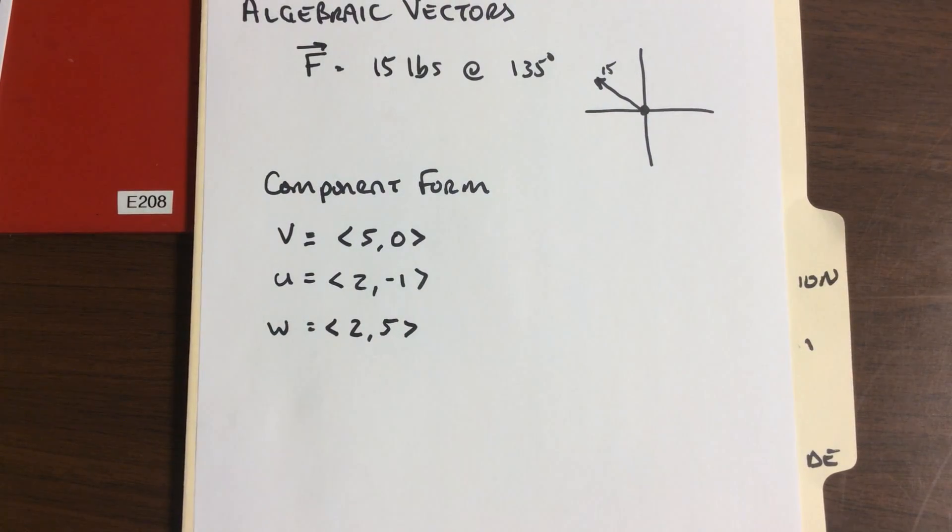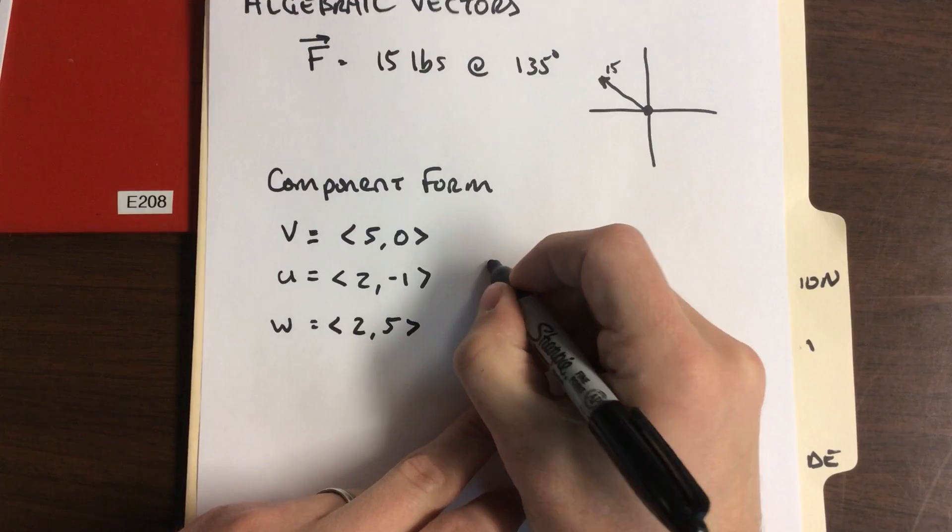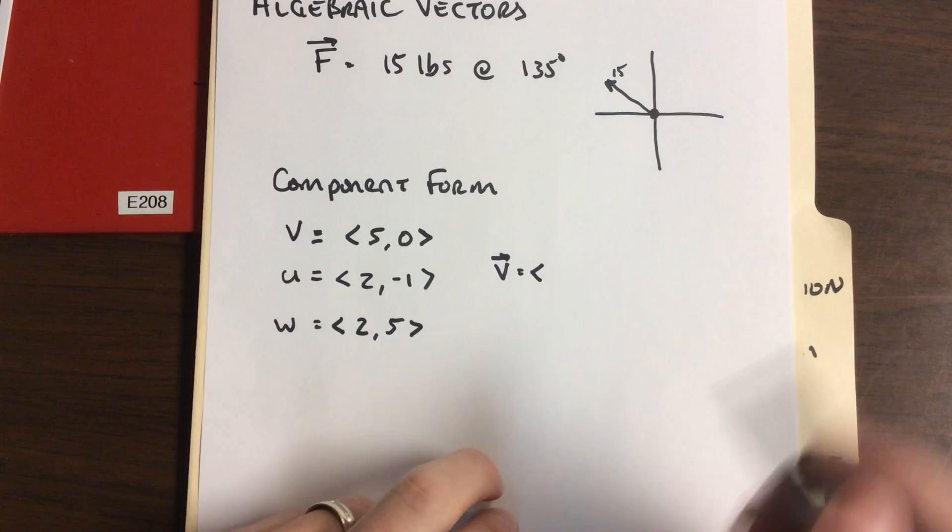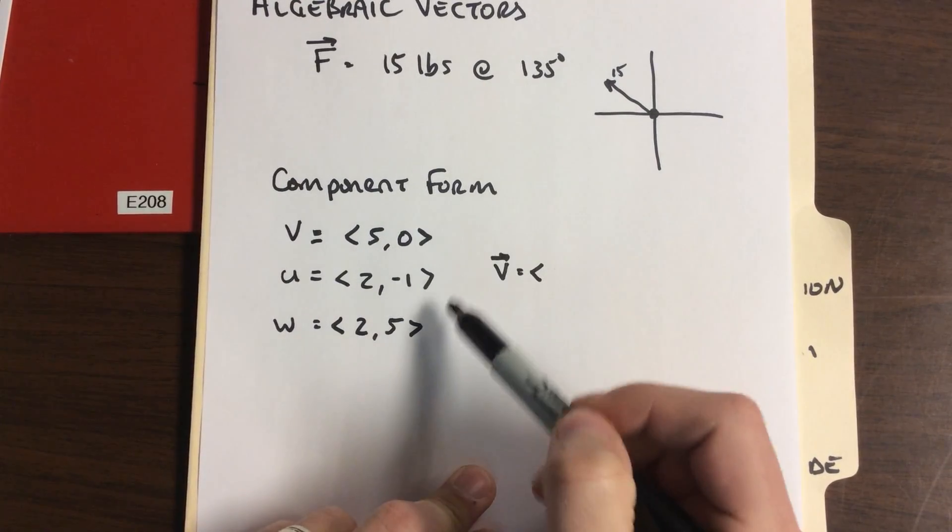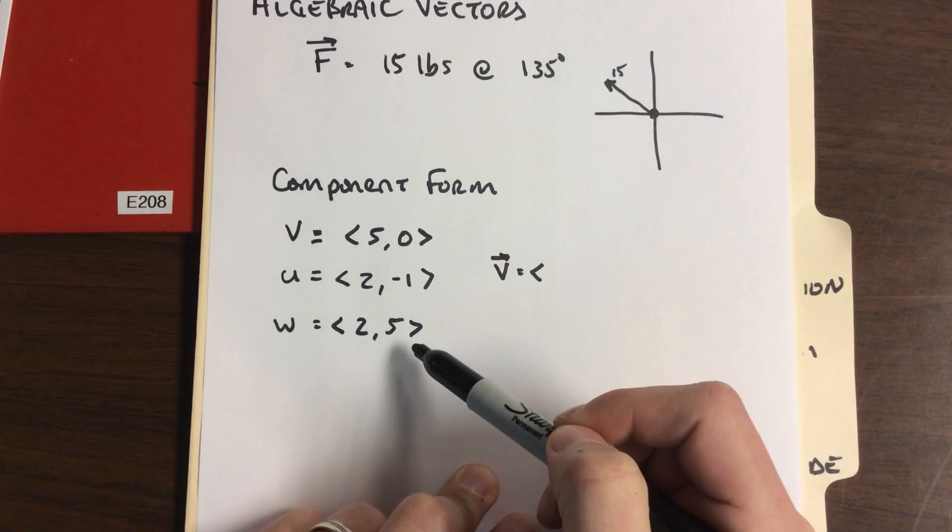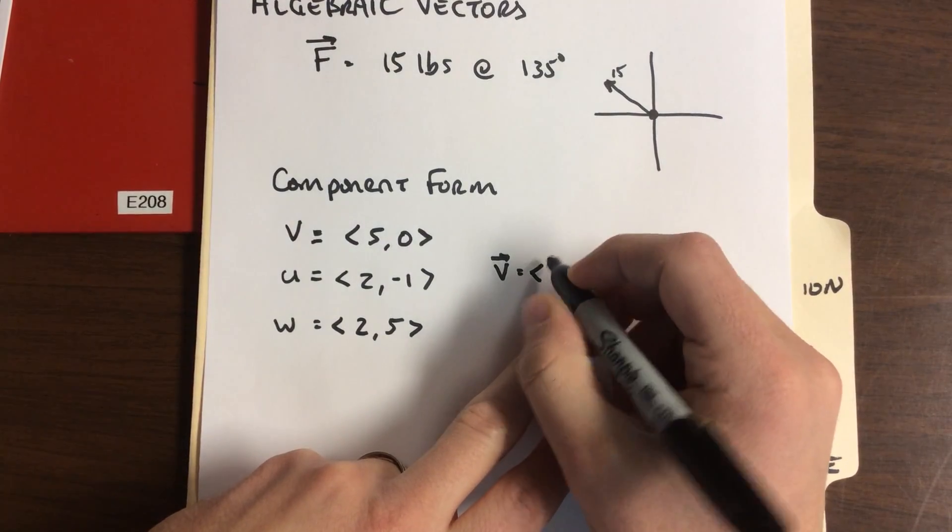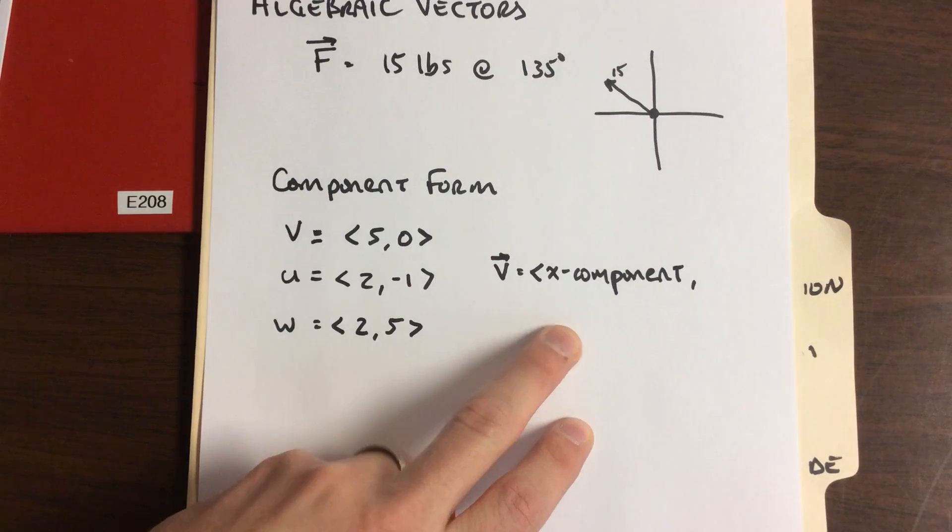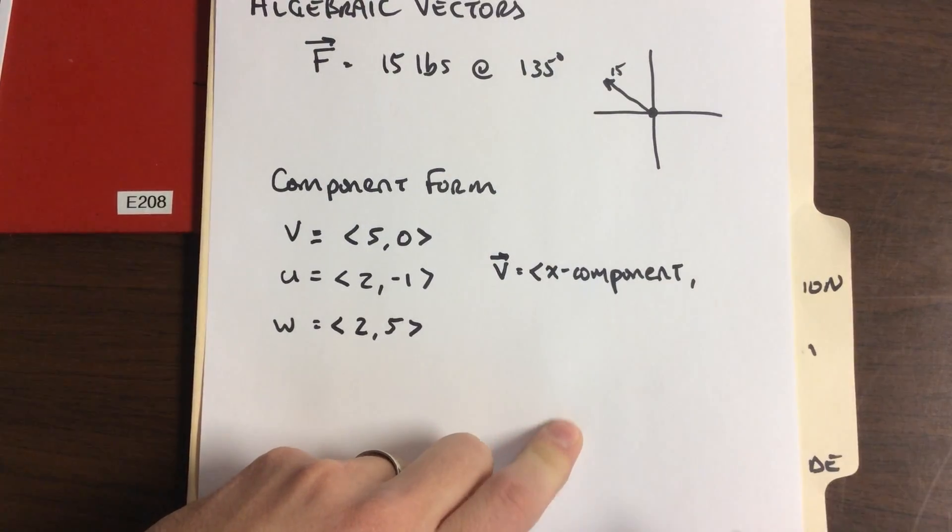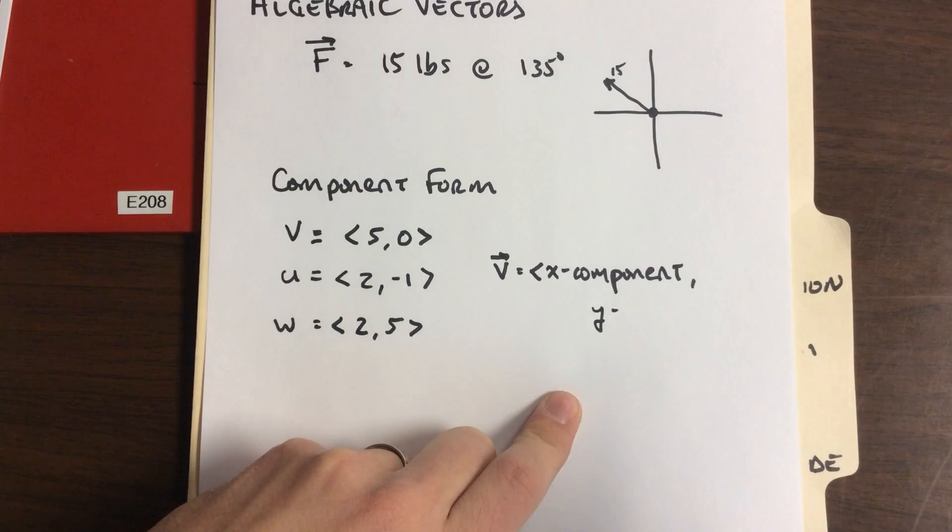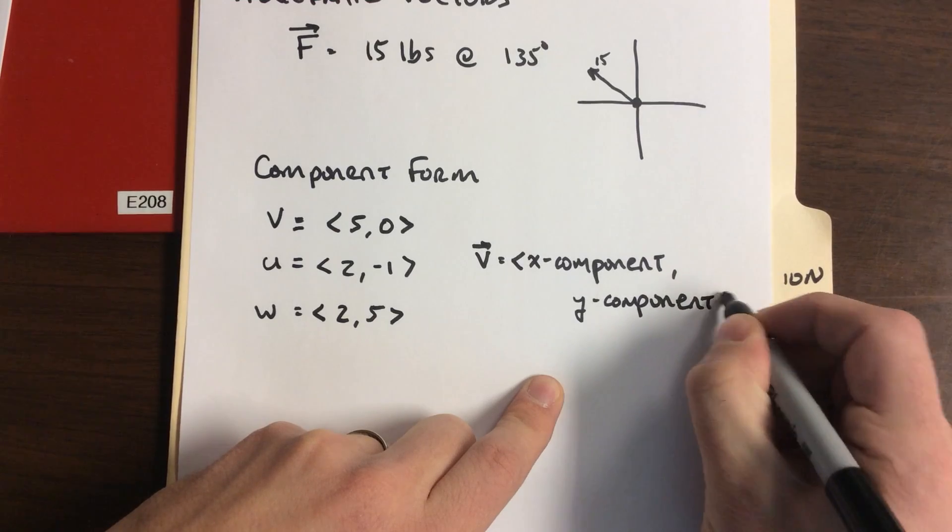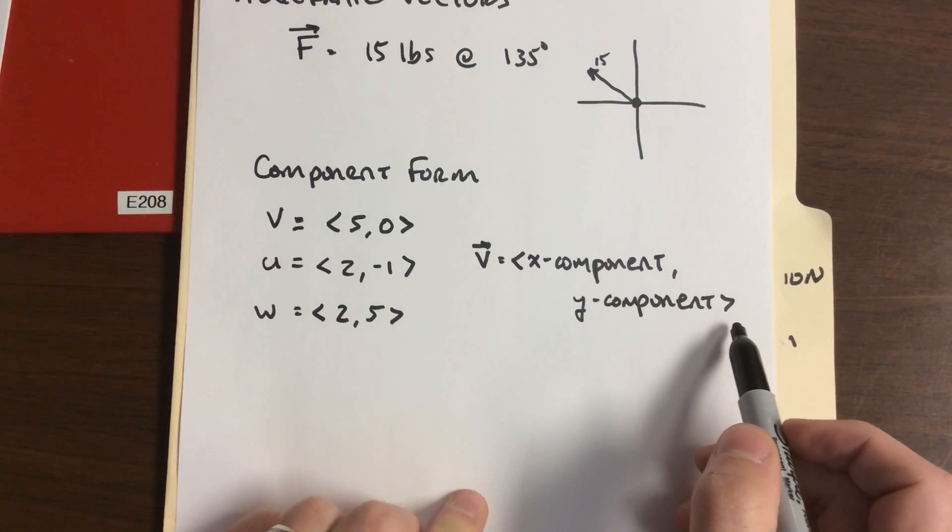Another representation is component form where we put the numbers to it: the x value, the y value. When we have a vector in component form, to identify it as a vector, we use these triangular brackets. When you see these, they mean vector. We've got the horizontal component, comma, the y component. It's breaking it up just like a coordinate.